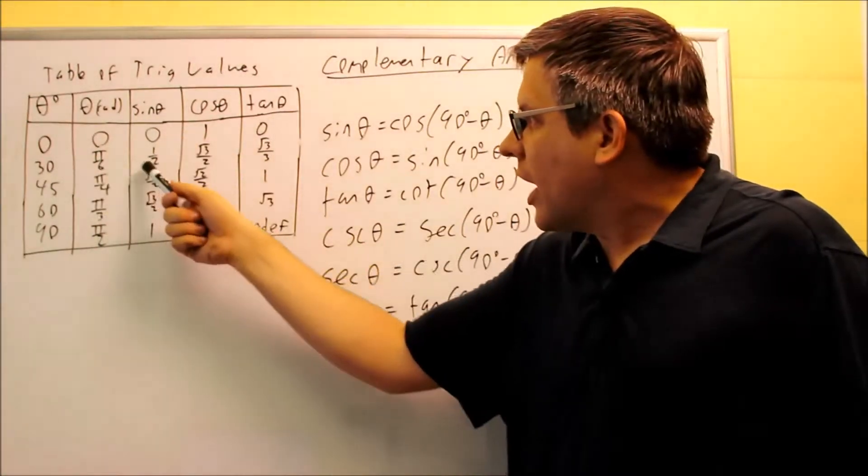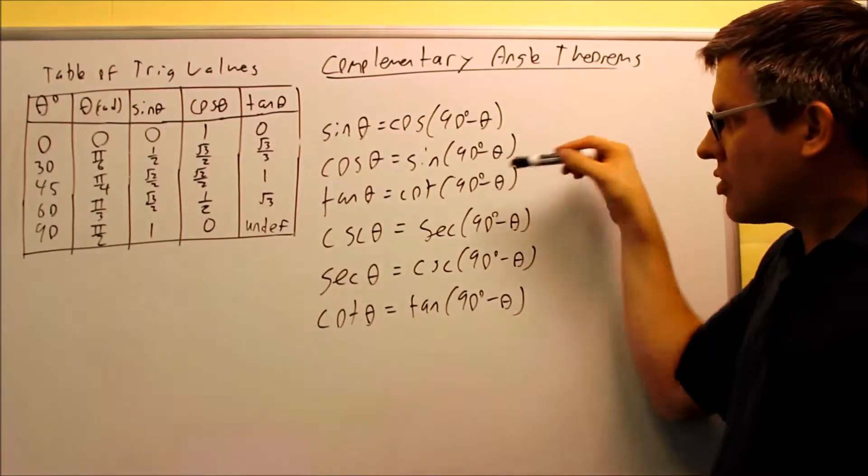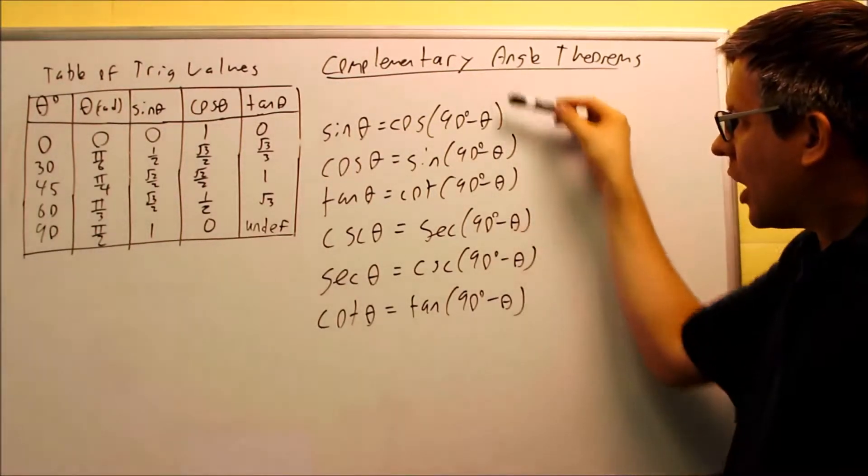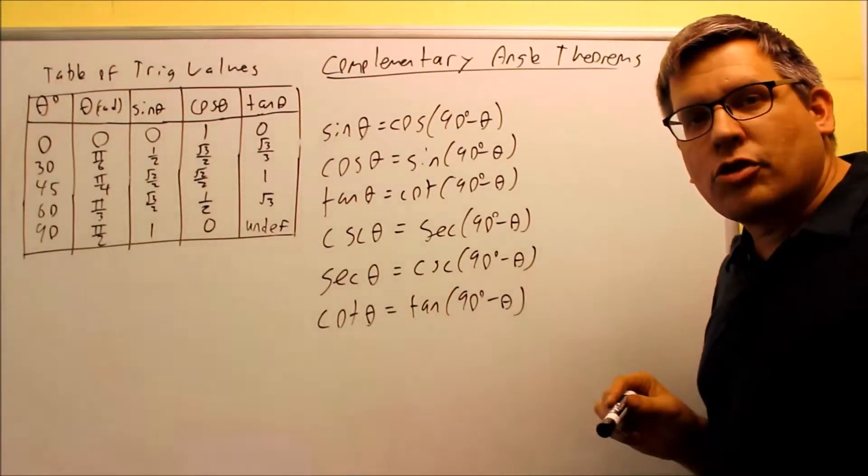Sine 30, one half, cosine 60 is one half also. So that also works for cosine, and it also works for the tangent. So we actually have the complementary angle theorems for all six different trig functions.